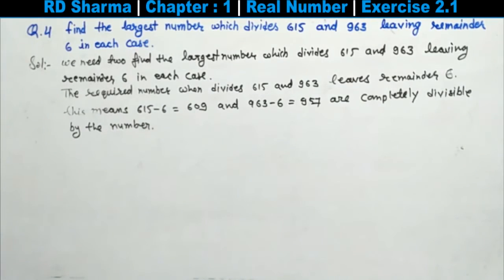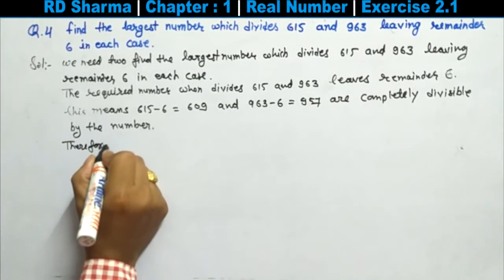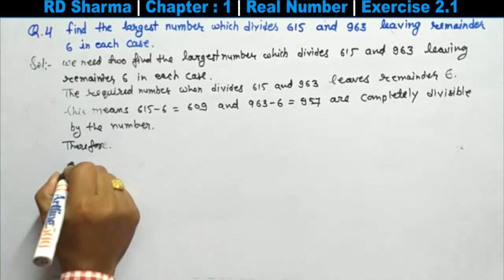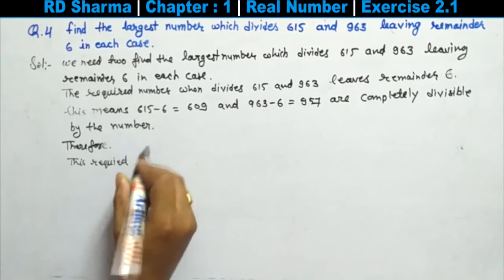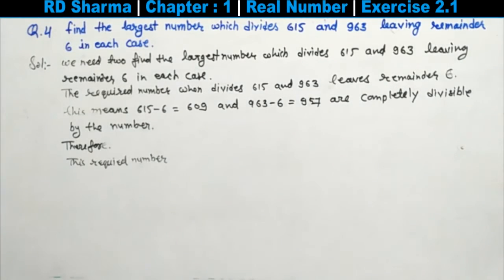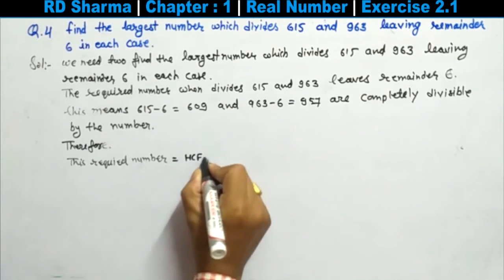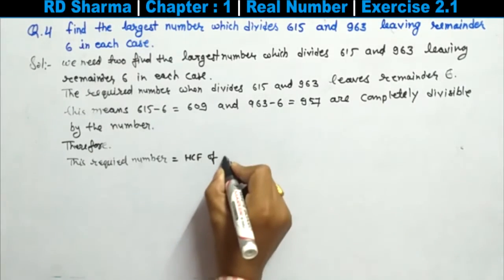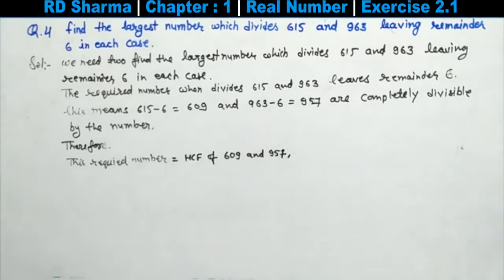Therefore, the required number is equal to the HCF of 609 and 957.